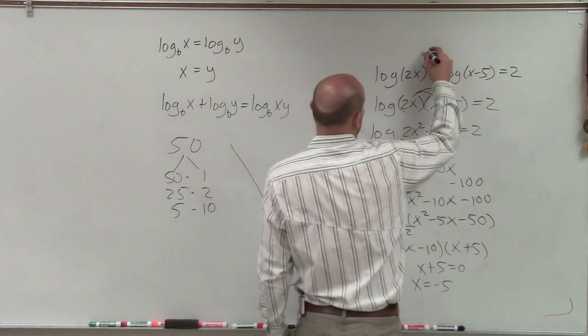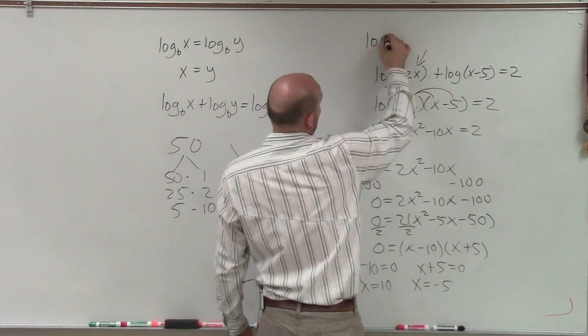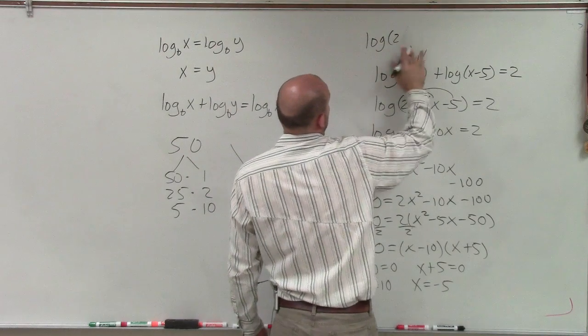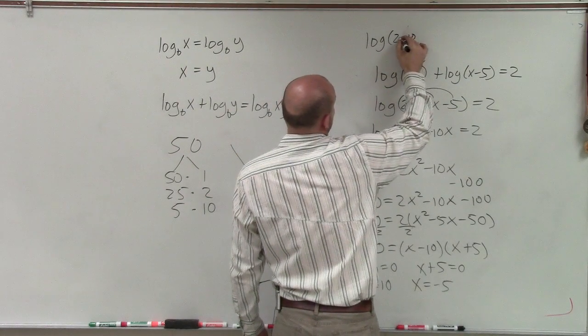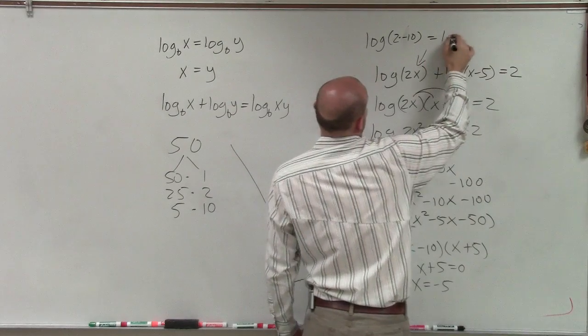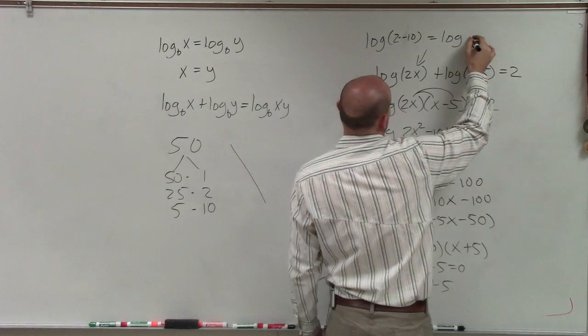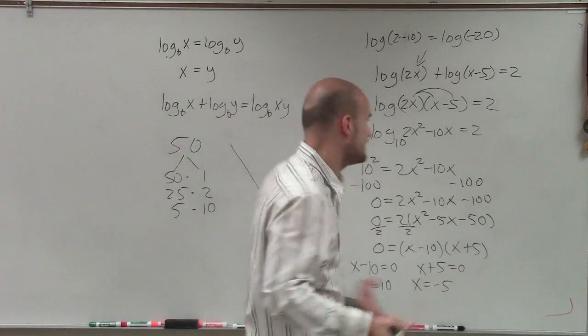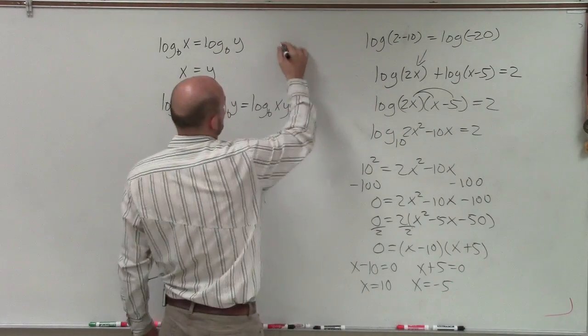And if I just plug in negative 5 here, I have log of 2 times negative 10. Well, that's going to be log of negative 20. And therefore, that's going to be an extraneous solution. Because if you look at it, ladies and gentlemen, remember, what does the logarithm come from?